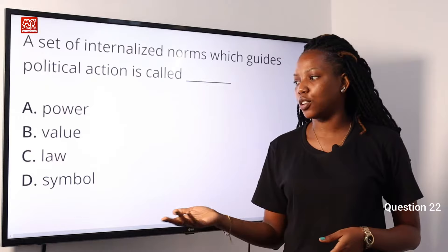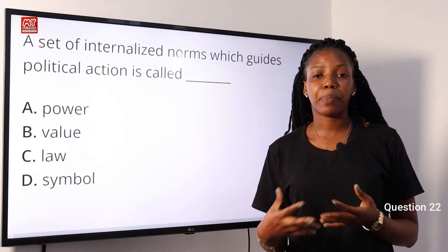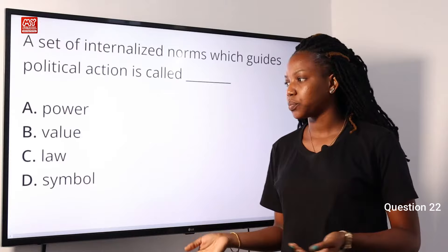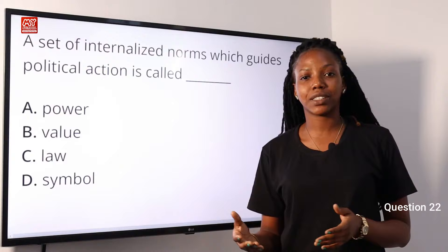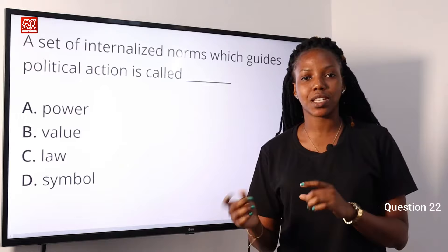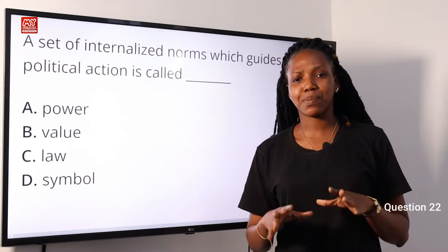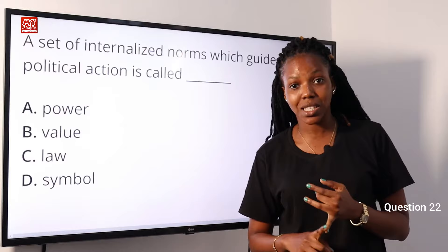What does power mean? Power is the capacity to affect another person's behavior through threats or sanctions. Option B, value is the quality of something that renders it useful. Law is a set of rules created to regulate behavior. Symbol is a sign or object that represents something else. From my explanation, we see that law is meant to regulate behavior, to guide behavior — it could be that of the citizen, both the citizen and politicians.